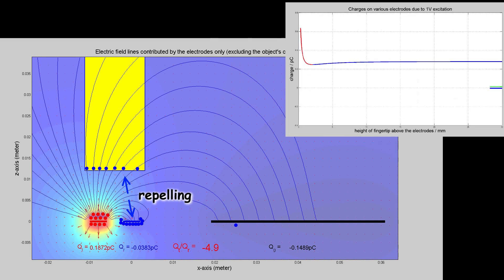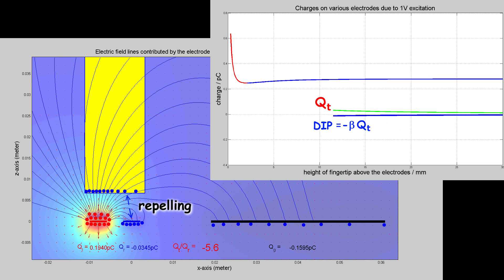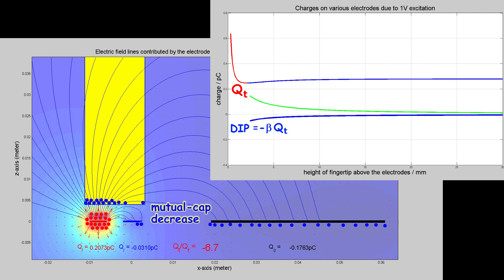When the finger moves towards the receiver, the negative charges on the fingertip repel the negative charges on the receiver, resulting in the decrease in the mutual capacitance, which is the touch signal.